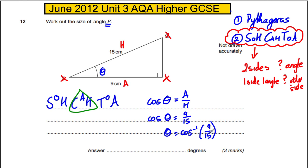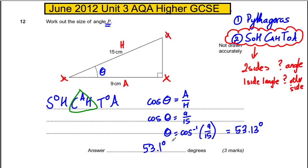You could just type that straight into your calculator. Don't work out 9 over 15 first and then take the inverse cosine — do the inverse cosine of the fraction 9 over 15 directly, making sure your calculator is in degrees mode.